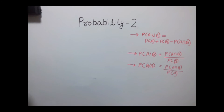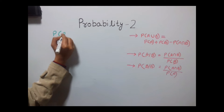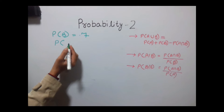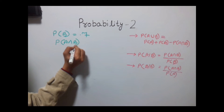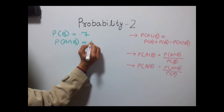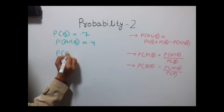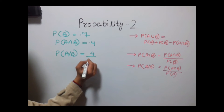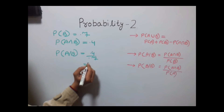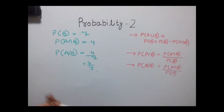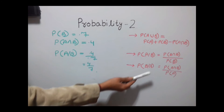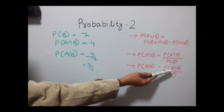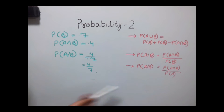Suppose probability of B is given as 0.7 and probability of A intersection B is given as 0.4. So probability of A given B will be 0.4 divided by 0.7. Similarly, probability of B given A means what is the probability of B when A has already taken place, with formula: probability of A intersection B divided by probability of A.